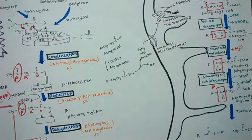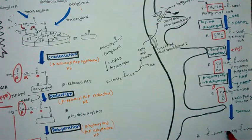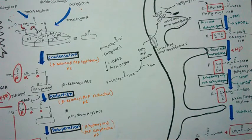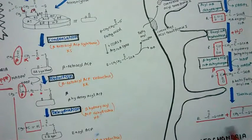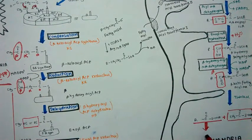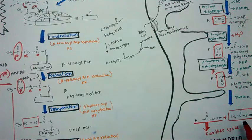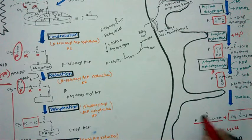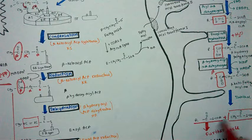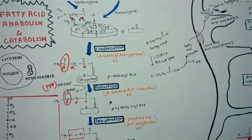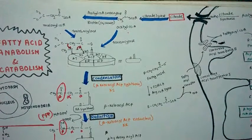After beta-ketoacyl-CoA is formed, the enzyme thiolase cleaves the fatty acyl-CoA, releasing a molecule of acetyl-CoA. The remaining shorter fatty acyl-CoA then undergoes further cycles of beta-oxidation, each time releasing another molecule of acetyl-CoA, until the entire fatty acyl-CoA is broken down.